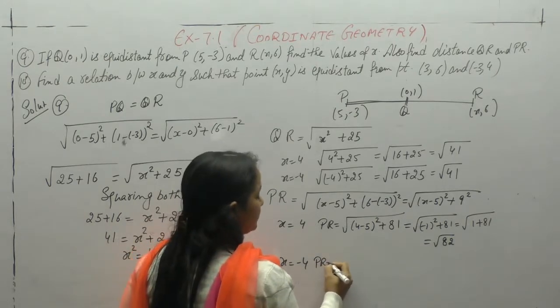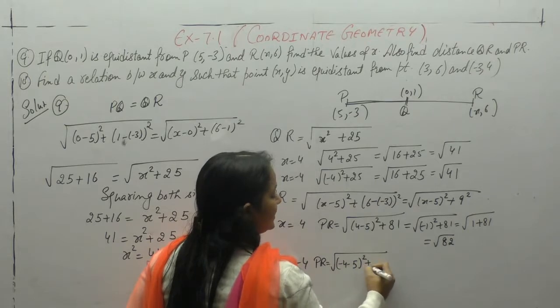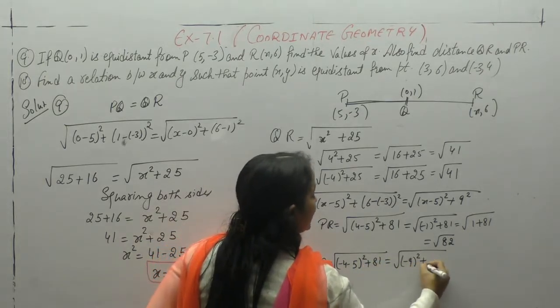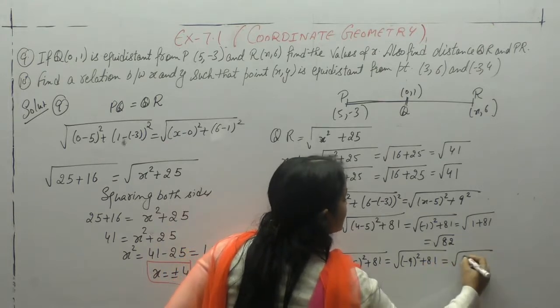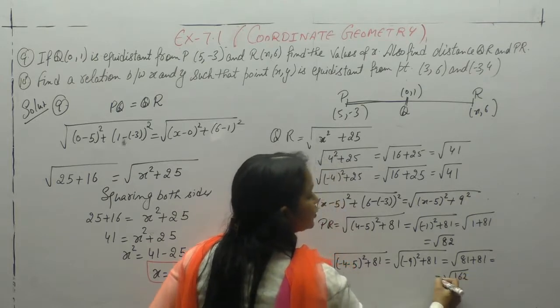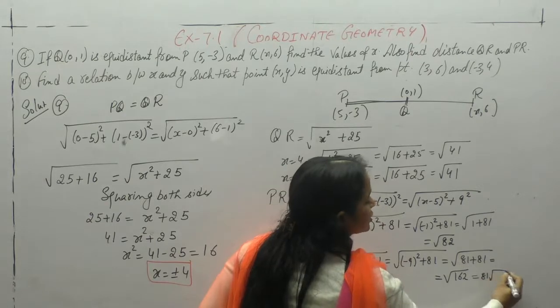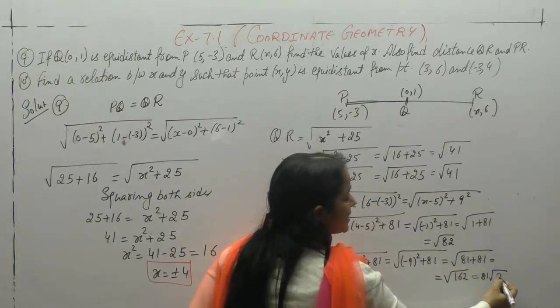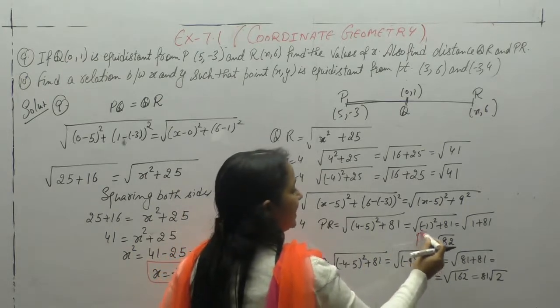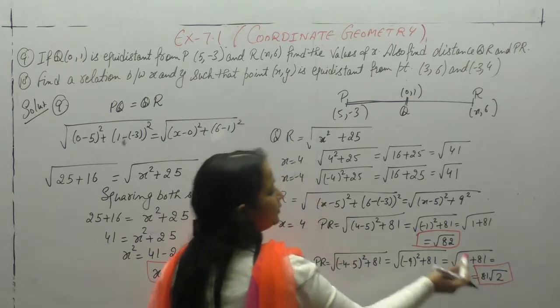Now when x is minus 4: minus 4 minus 5, 9 square. Minus 9 square plus 81. So 81 plus 81 is 162. Or we can take 81 common. Square root remains 1 plus 1, square root of 2. So we found PR value, PR has two values: square root of 82, and 81 square root of 2.